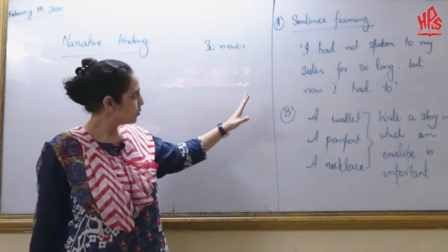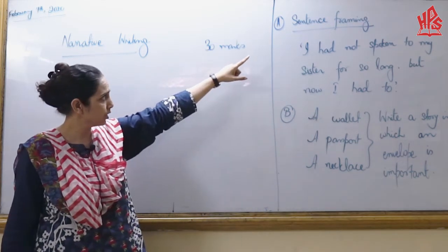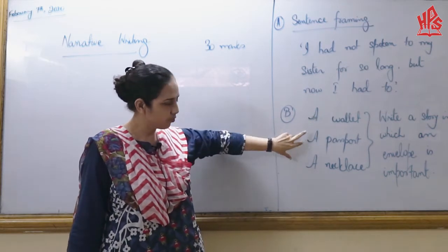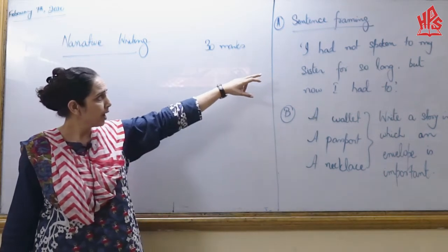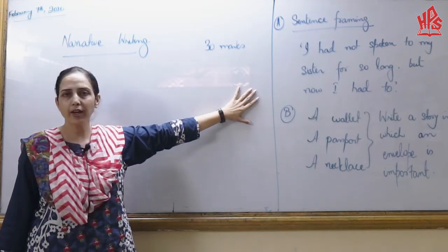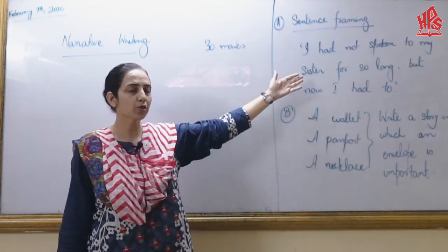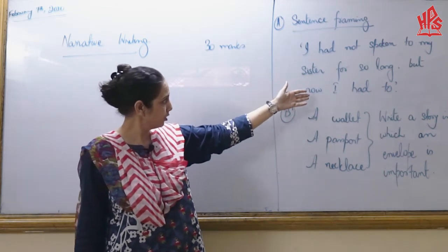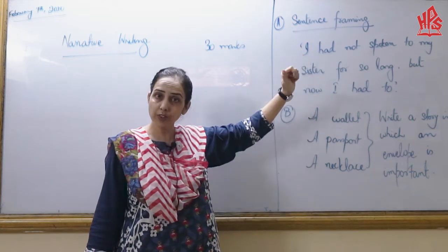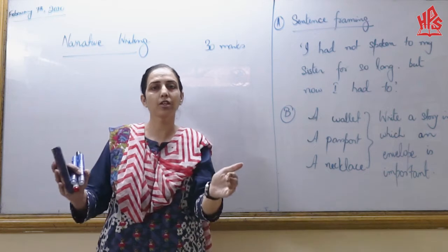In this case we are talking about sentence framing. Generally we divide it into two phases: sentence framing, and then the object-based type. For example, the sentence given might be: 'I had not spoken to my sister for so long, but now I had to.' Now write a story in which this sentence is important. The whole sentence, within the tense and within the parameters you can see, has to be framed into your story.